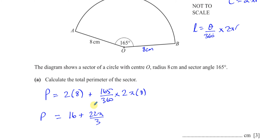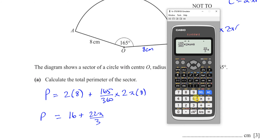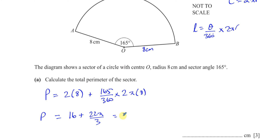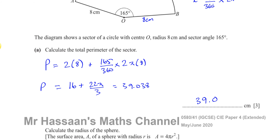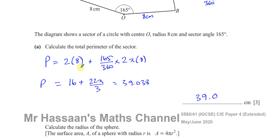That's the perimeter in its exact form. Rounding to 3 significant figures gives 39.038, which rounds to 39.0 centimeters. Unless otherwise stated, we express the answer to 3 significant figures. That's the answer to part A.